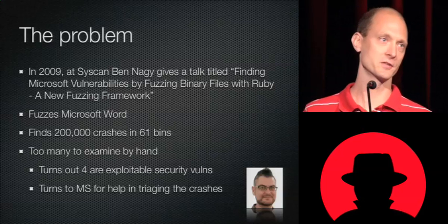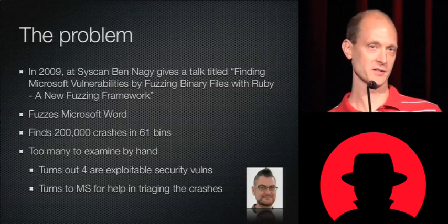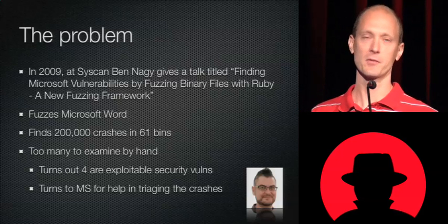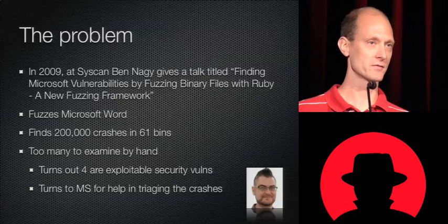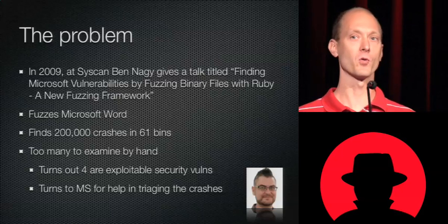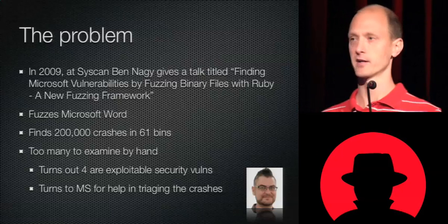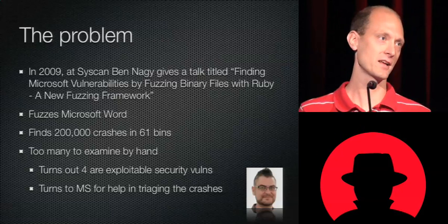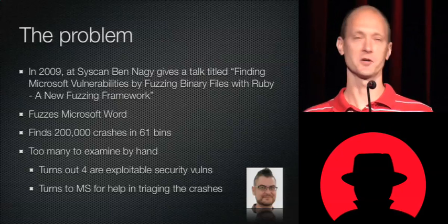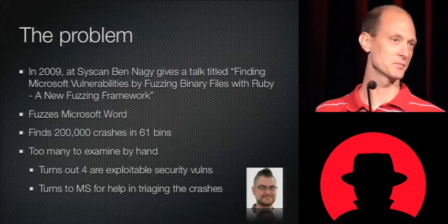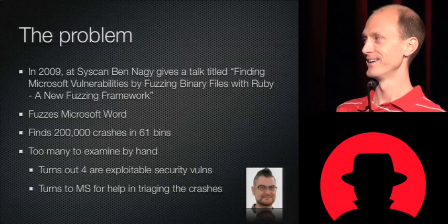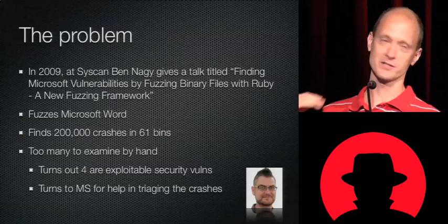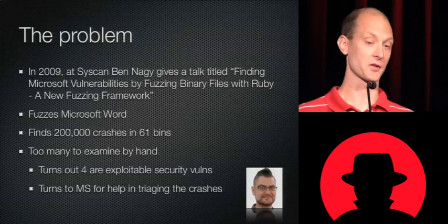It turned out that of those 61, four were serious security vulnerabilities and the rest weren't. The problem was trying to figure out which ones were exploitable. He couldn't do it himself — he had to actually give them to Microsoft and they helped triage them. The point is it was too much resources needed to analyze all the crashes.